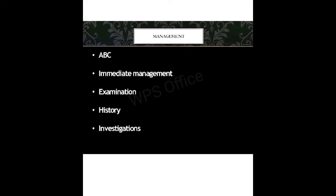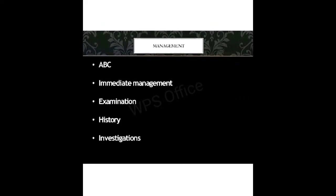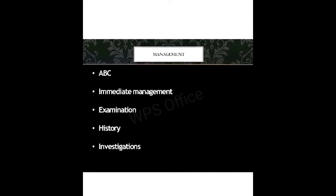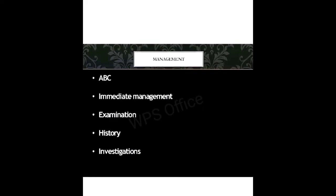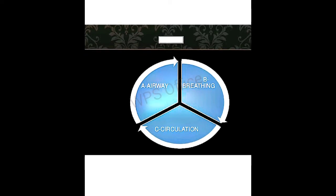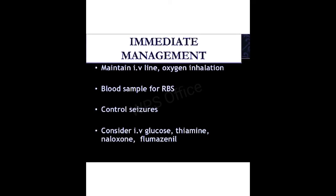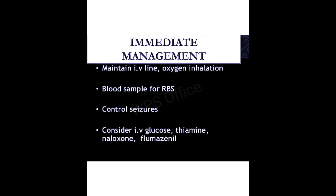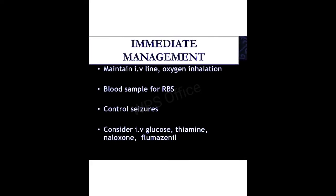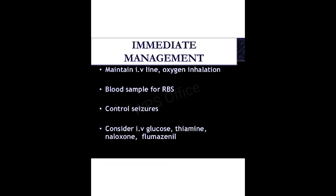In the management, we first perform ABCs — airway, breathing, and circulation — and provide immediate management. Then we do further examinations, take the history, and send investigations. For immediate management, we maintain an IV line, give oxygen inhalation, take a blood sample for random blood sugar, and control seizures. Medications such as IV glucose, thiamine, and naloxone are given to increase glucose levels and decrease drowsiness.